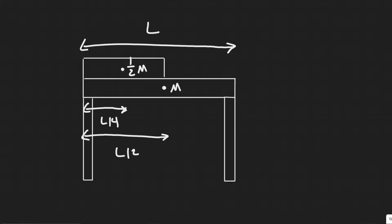In this problem we're told a uniform steel beam has a mass of 940 kilograms. On it is resting half of an identical beam, as shown in the figure. What is the vertical support force at each end?